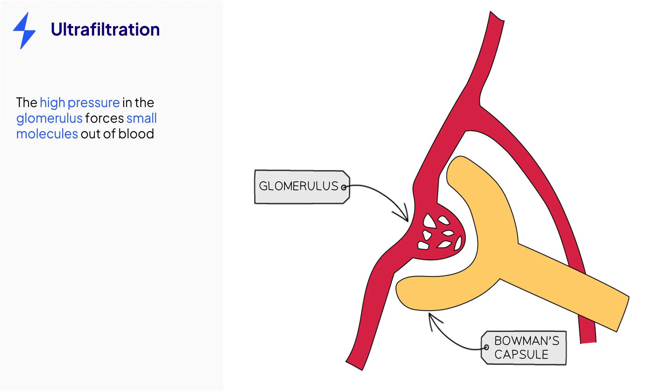This occurs between the glomerulus and the Bowman's capsule in the nephron. Remember that the high pressure in the glomerulus will force out any molecule that is small enough to fit through the openings in the capillary walls and the lining of the Bowman's capsule.